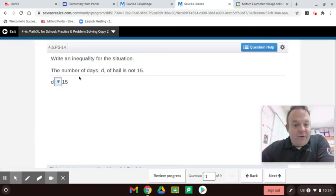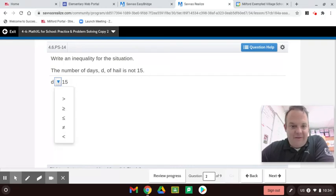The number of days, D, of hail is not 15. It's not 15. That means it's not equal to 15. That means not equal to. Let's see if we get that right.